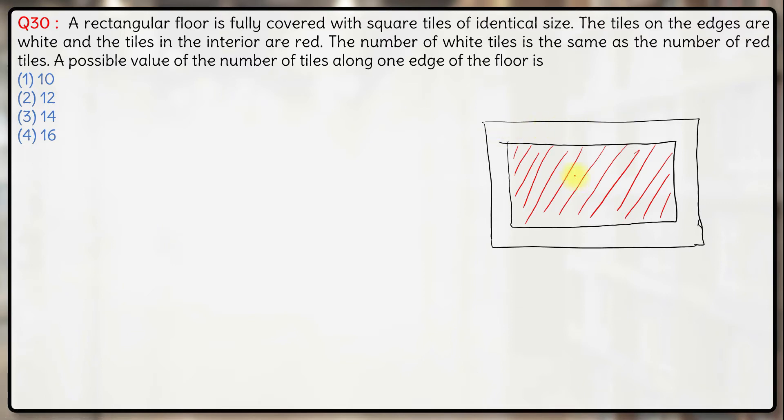So the number of white tiles is same as the number of red tiles, that means the number of red tiles is half of the total number of tiles. The number of red tiles is same as the half of the number of total tiles.